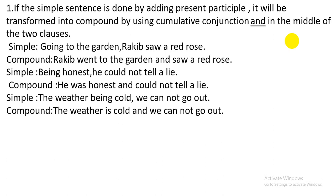Explanation: if we want to transform this simple sentence into a compound sentence, we have to change the present participle phrase into a main clause. We use subject 'Rakib' first, then 'went' — the past form of 'go' — since the other clause is in the past tense. After that, we use 'and' in the middle of the two clauses. The compound sentence is: 'Rakib went to the garden and saw a red rose.'